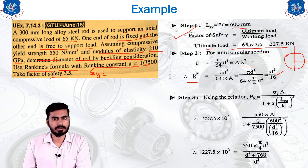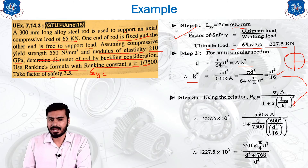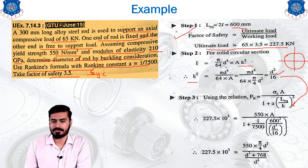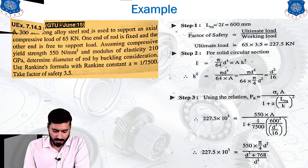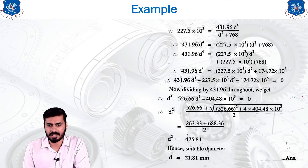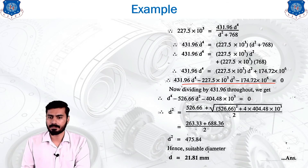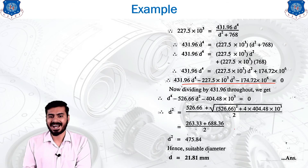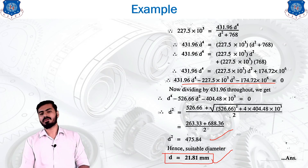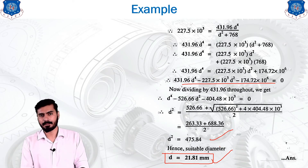Substituting k = d/4 into the Rankine's equation and simplifying gives an equation in terms of d^4. By further simplification, a quadratic equation in d² is obtained. Using the quadratic formula — minus b plus or minus square root of (b² − 4ac), divided by 2a — gives the value of d², and taking the square root gives the diameter of the component. This was the solving method using Rankine's formula to design the component.